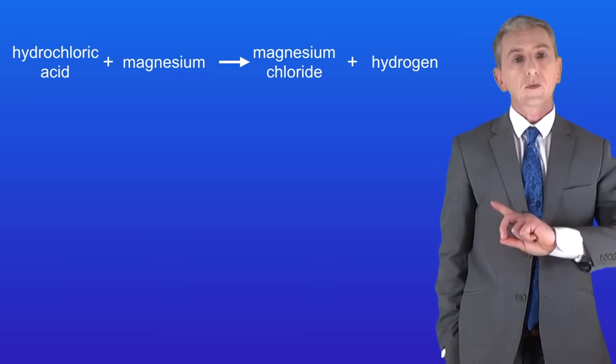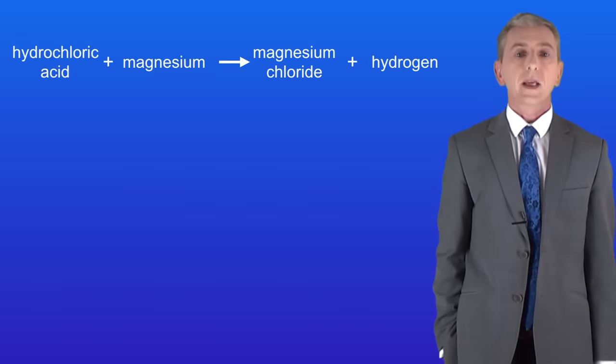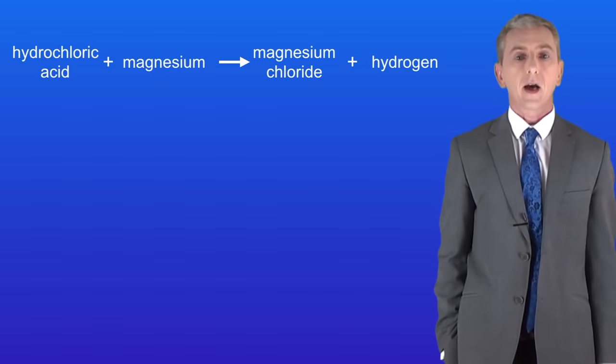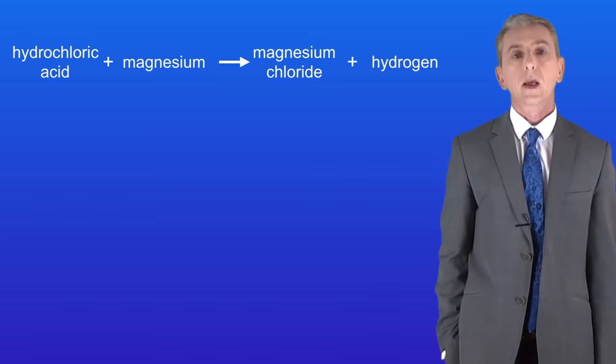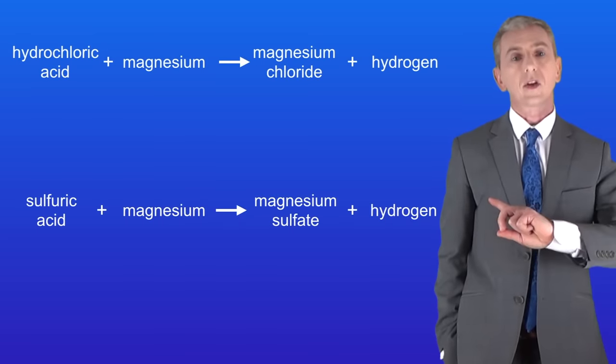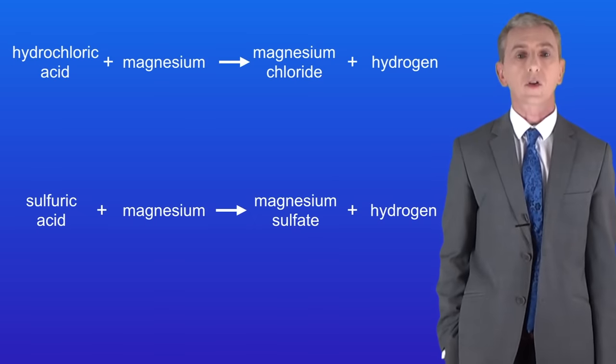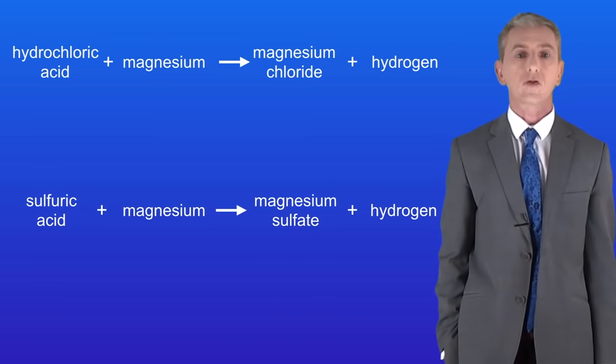So here's magnesium reacting with hydrochloric acid. We're making the salt, magnesium chloride and hydrogen gas. And here we can see magnesium reacting with sulfuric acid to make the salt magnesium sulfate and hydrogen gas.